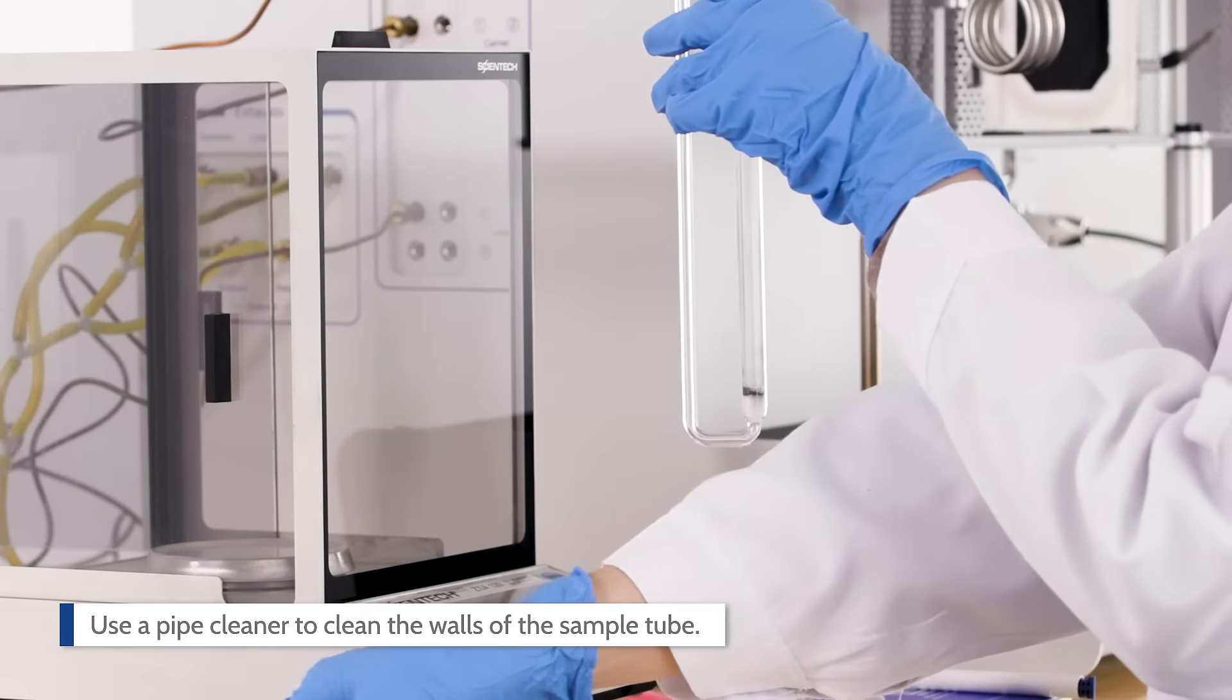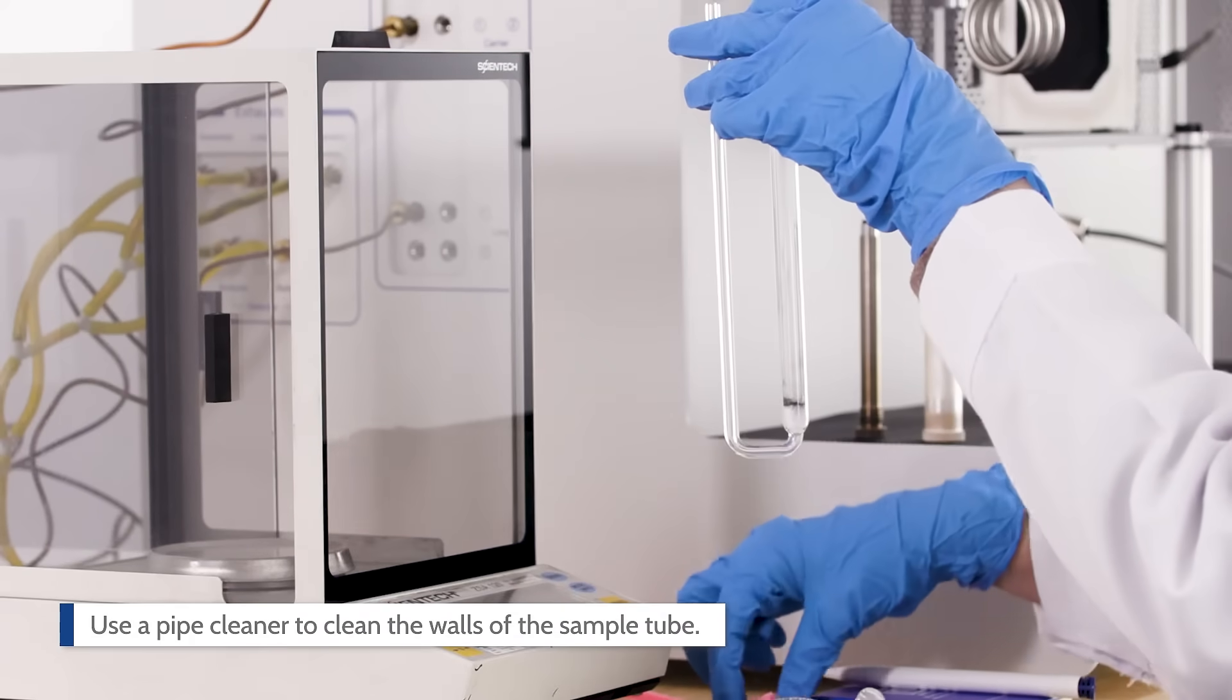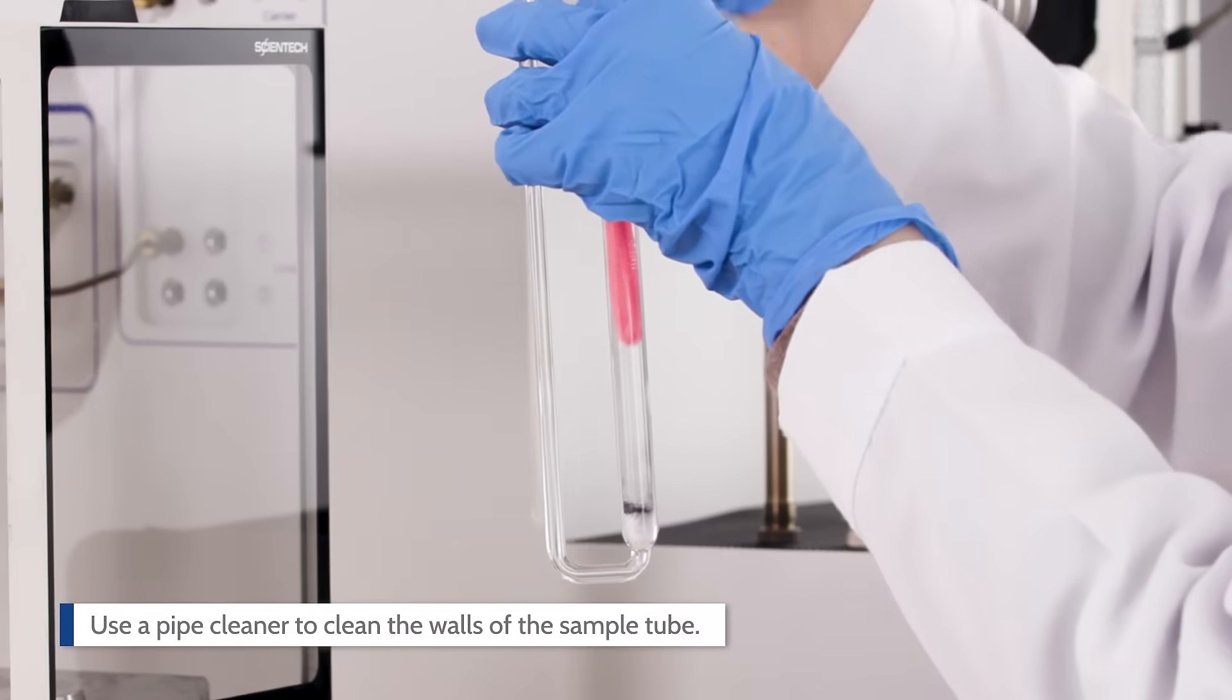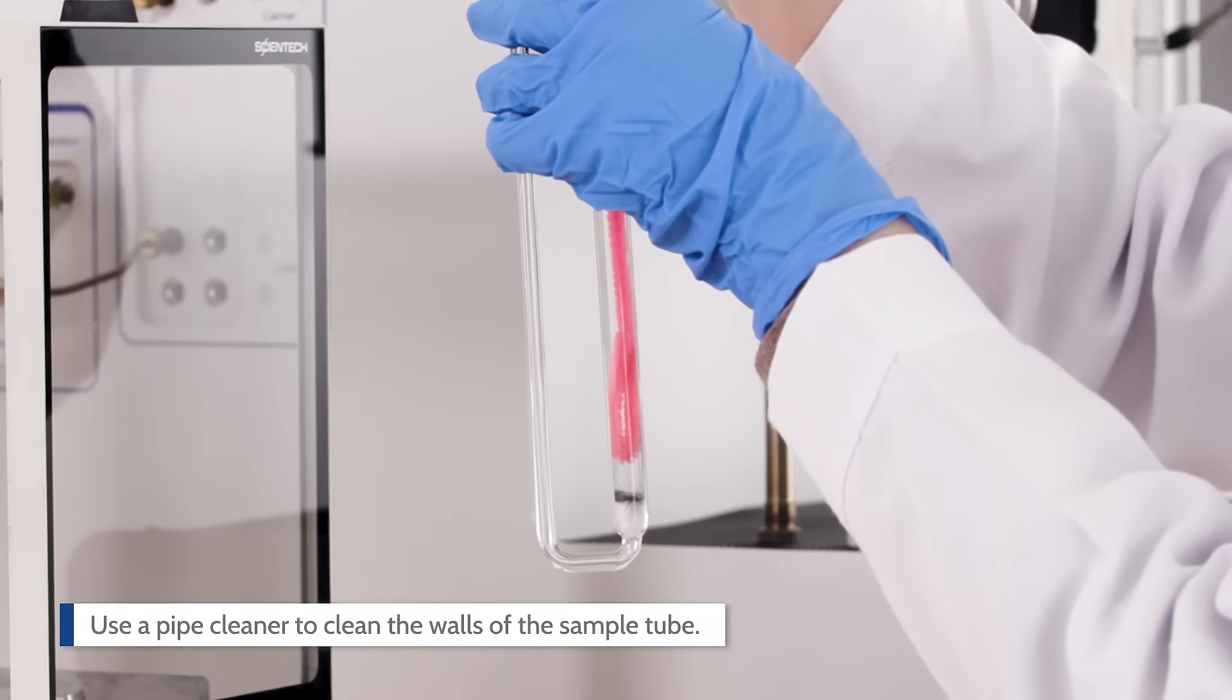Use a pipe cleaner to clean the walls of the sample tube. Make sure the sample bed is within the hot zone which extends to about 2.5 centimeters from the bottom of the tube.